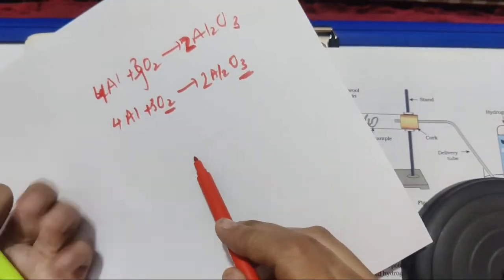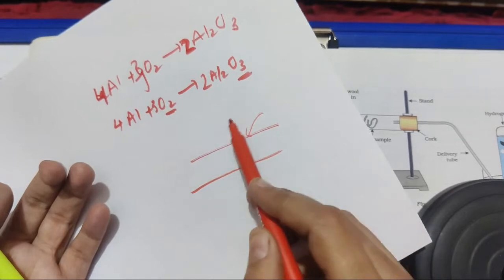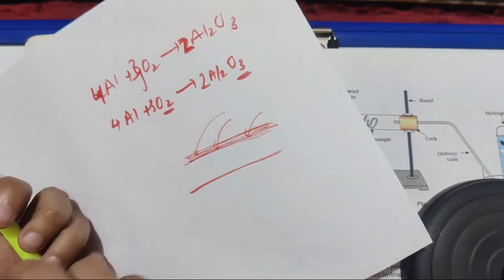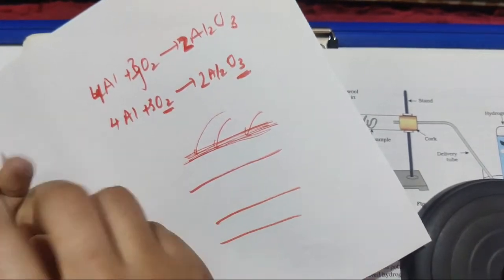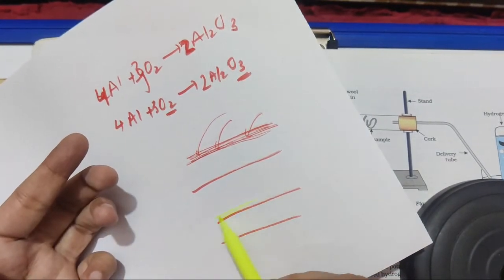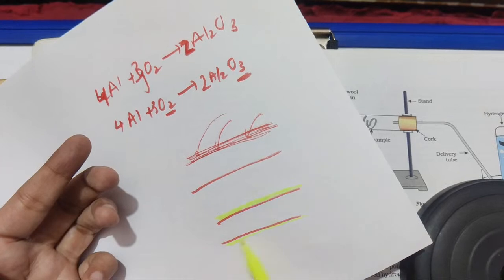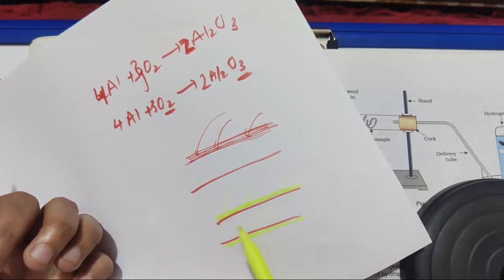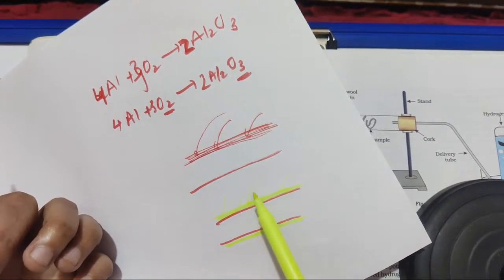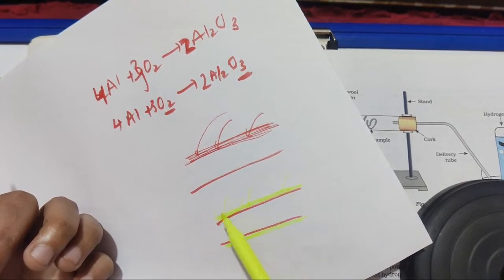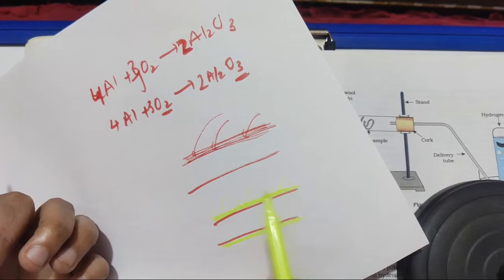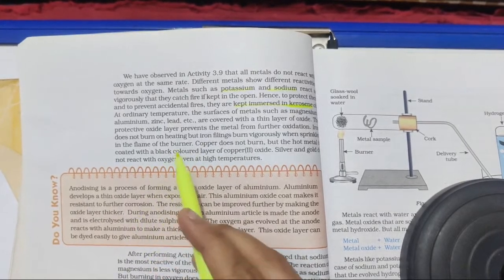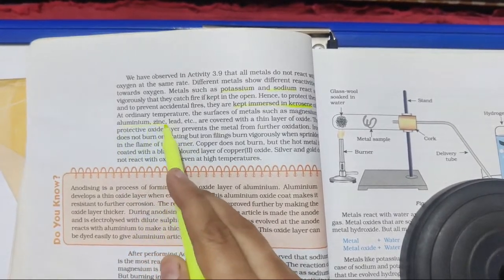Whenever any metal is exposed to air and moisture, corrosion starts. But in the case of aluminium, the moment it reacts with oxygen it forms a thick protective layer. This protective layer protects it from further corrosion. This is why aluminium has a dull appearance — because of the formation of this protective layer. The metals protected by this kind of coating are aluminium and zinc.